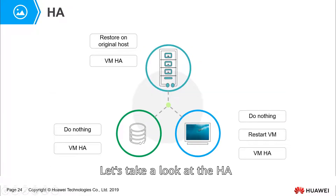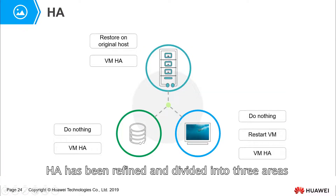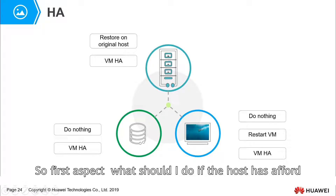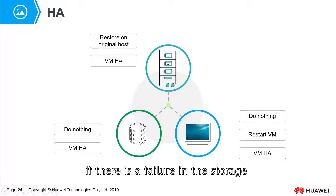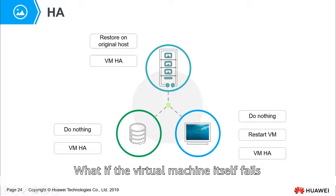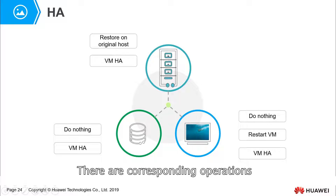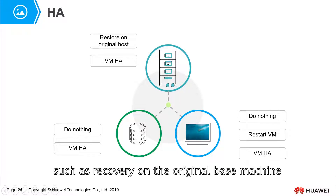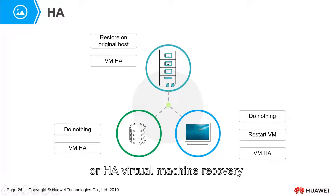First, let's look at HA. HA has been refined and divided into three areas: what to do if the host has a fault, what to do if there is a failure in the storage, and what to do if the virtual machine itself fails. There are corresponding operations such as load balancing, migrating VMs to another host, HA virtual machine recovery, or simply taking no action.